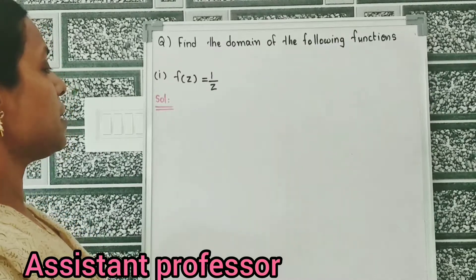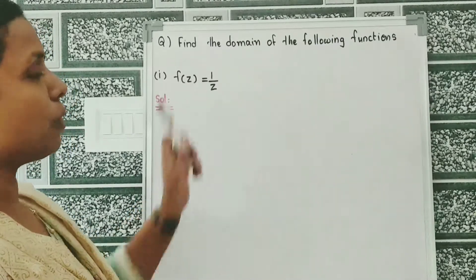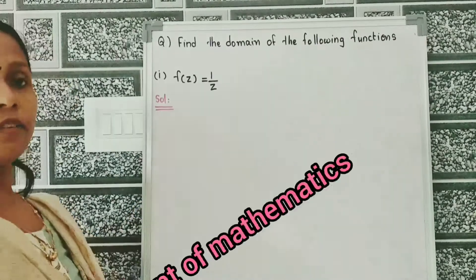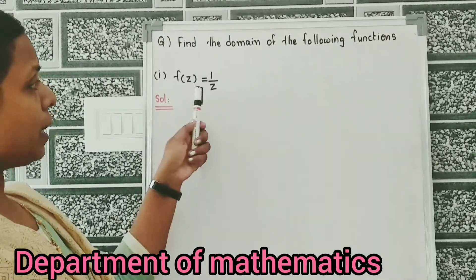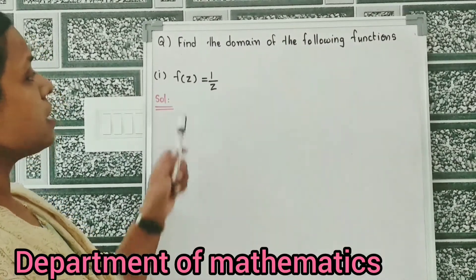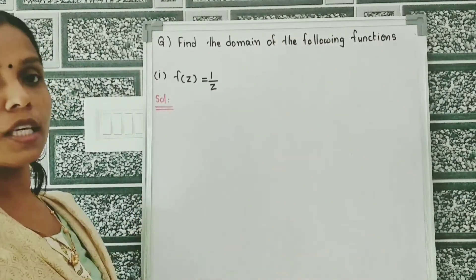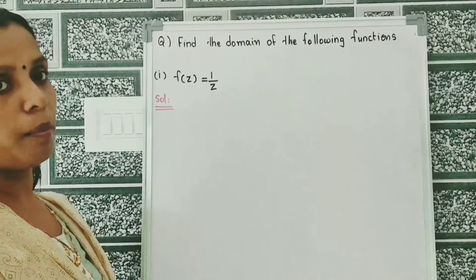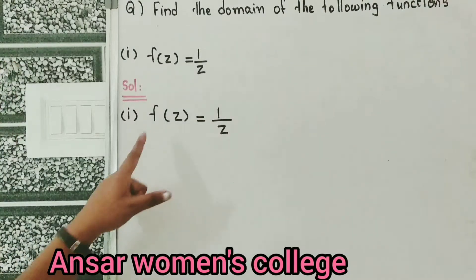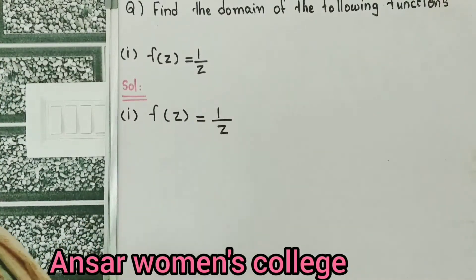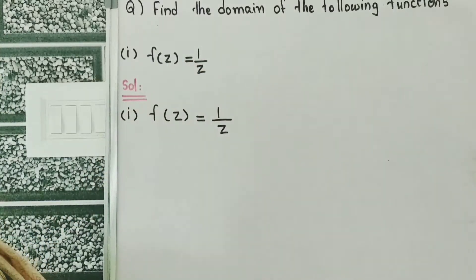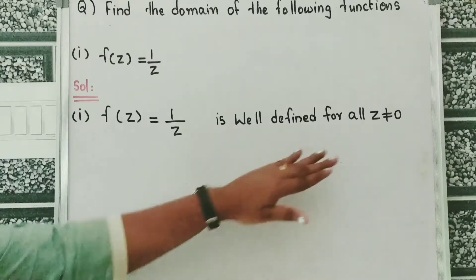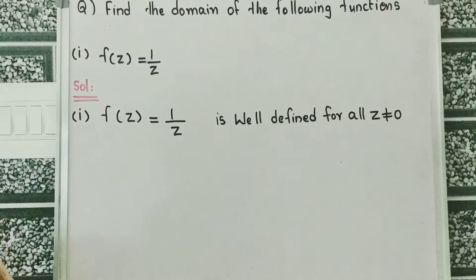The first problem is f of z is equal to 1 by z. We have to find the domain of this function. Given that f of z is equal to 1 by z, this function is well defined for all z not equal to 0.